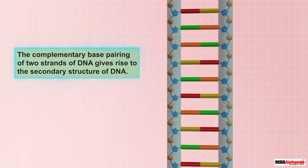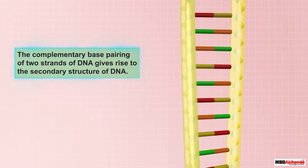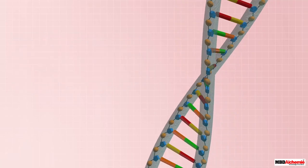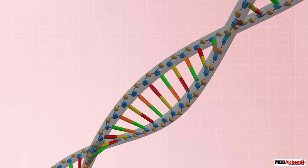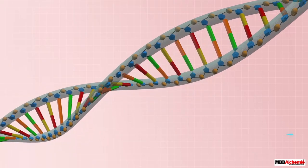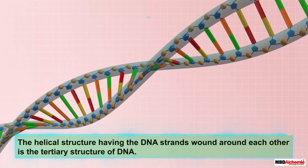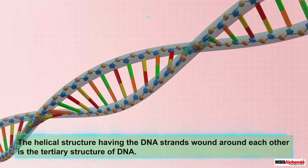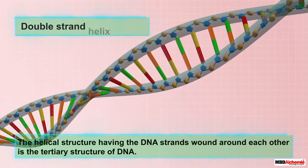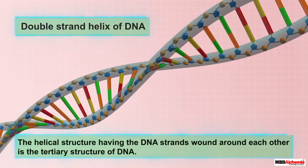The two strands of DNA held together by hydrogen bonds spiral around each other, forming a double helical structure. This structure, having two DNA strands wound around each other, is the tertiary structure of DNA, also called the double strand helix of DNA.